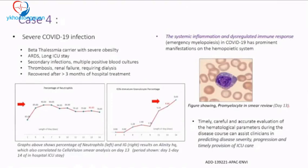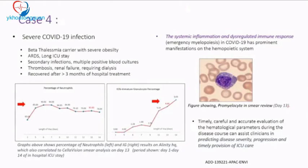Despite thrombosis, renal failure requiring dialysis, multiple infections, and positive blood cultures, the patient survived after more than three months of hospital treatment. The systemic infection triggered emergency myelopoiesis; the hematopoietic system showed promyelocytes with vacuoles and toxic granules on the peripheral smear. Notably, the neutrophil count remained persistently elevated and did not decrease even by day 30.